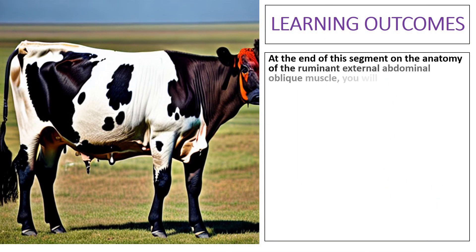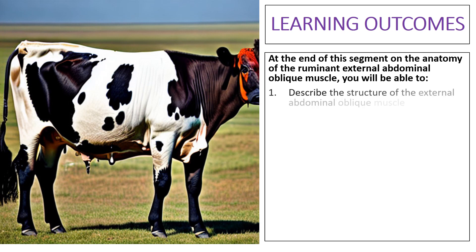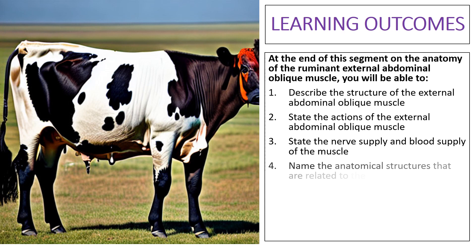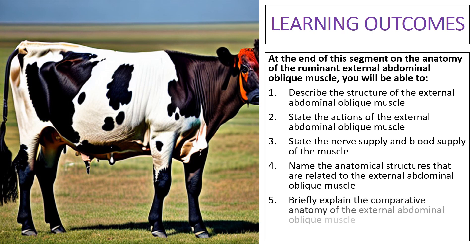At the end of this segment on the anatomy of the ruminant external abdominal oblique muscle, you will be able to describe the structure of the external abdominal oblique muscle, state its actions, state the nerve supply and blood supply, name the anatomical structures related to it, and briefly explain the comparative anatomy of the external abdominal oblique muscle.